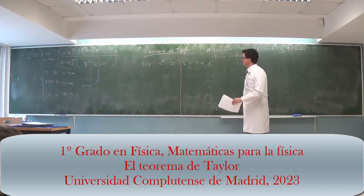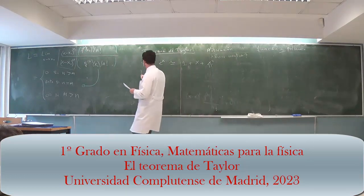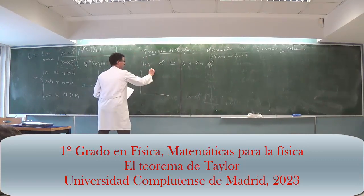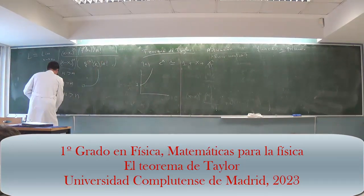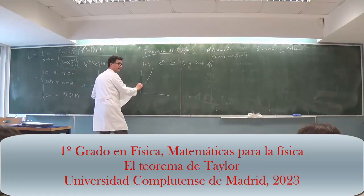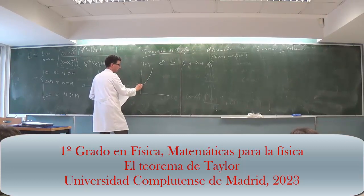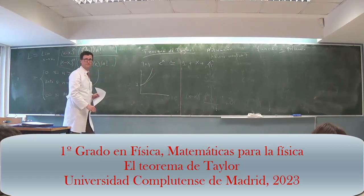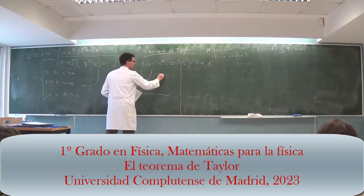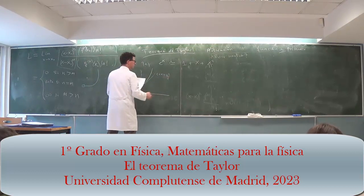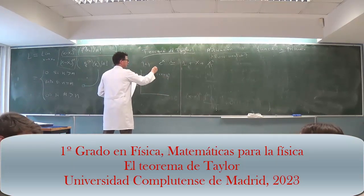If I draw it, the exponential starts at 1 and goes up very quickly. The Taylor approximation to that order is tangent, has the same curvature — it is the parabola that best approximates, but then it goes a little more slowly. This is 1 plus x plus x² divided by 2, and this is e^x.